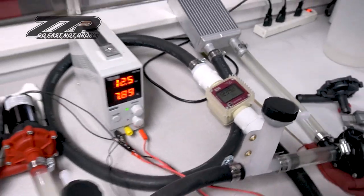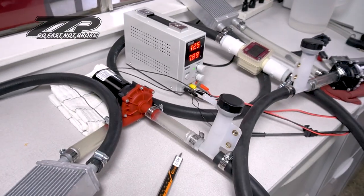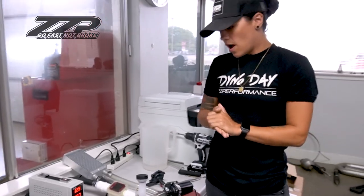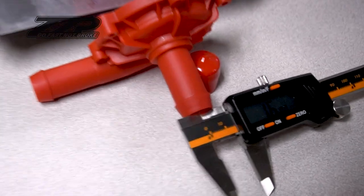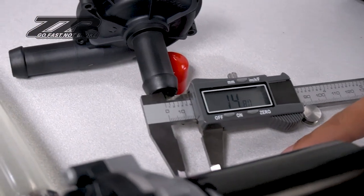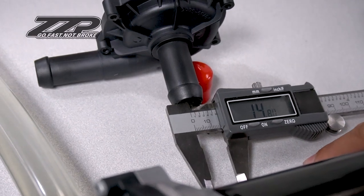The way we were able to achieve that was we changed out the windings in the pump. We were able to get a bigger inlet. About 16 millimeters there. Bosch over here is about just under 15. So that's a millimeter more of flow.